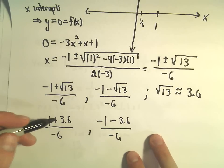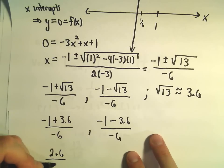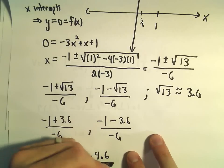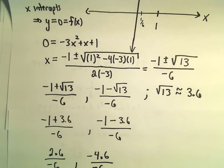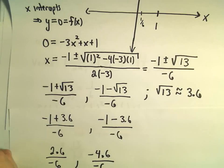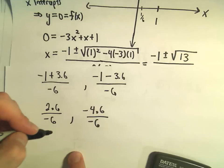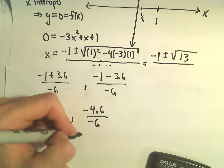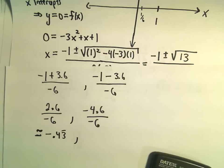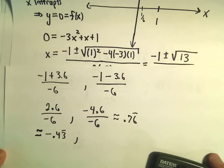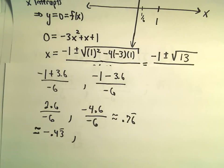So negative 1 plus 3.6 is 2.6 over negative 6. That'll be one of them. Negative 1 minus 3.6 is negative 4.6 over negative 6. So let's see. 2.6 divided by negative 6. This is roughly equal to negative .43 repeating. That's actually exactly what it is. And our second value, so 4.6 divided by 6 is going to be positive. I'm getting the second value to be roughly equal to .76 repeating.